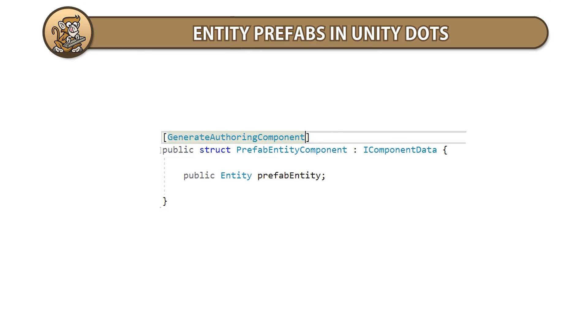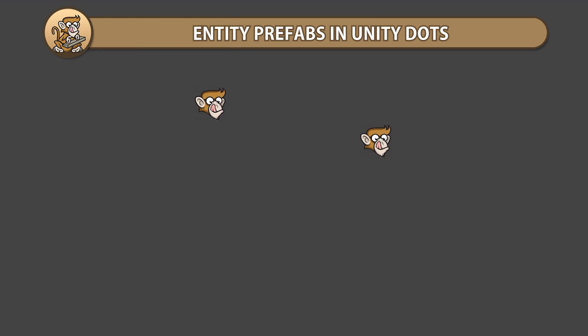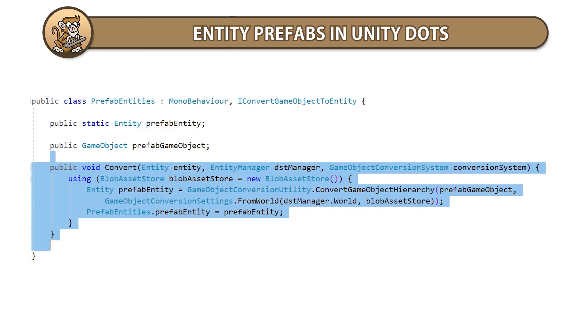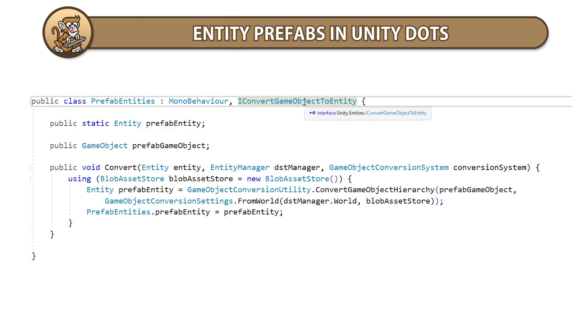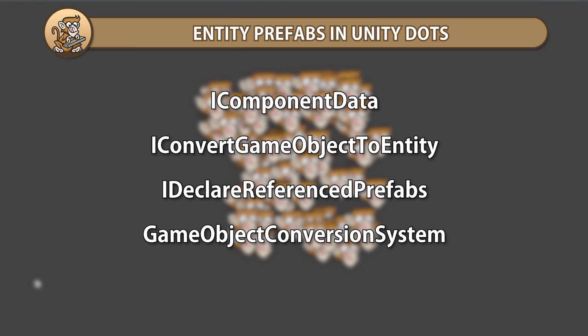In this video, we're going to learn how to instantiate prefabs in Unity DOTS. We're going to build our prefabs using normal game objects as usual, and then we're going to convert them into super fast entities that we can spawn during runtime.